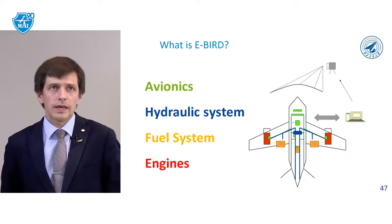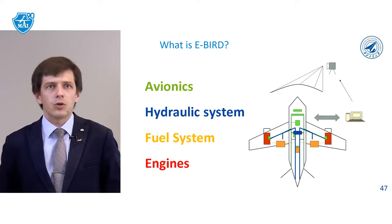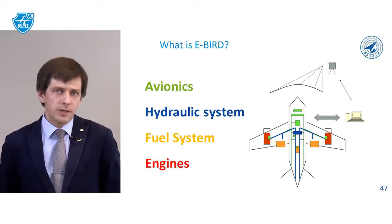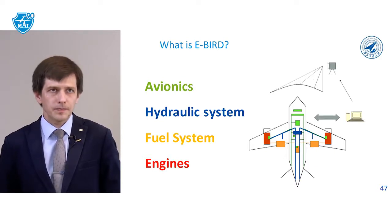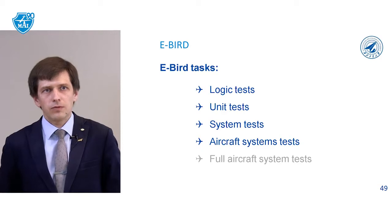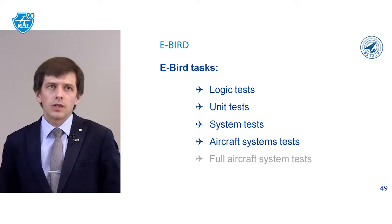The next step is verification on the eBird (electronic bird). On this slide the green represents avionics systems, blue is hydraulic systems, yellow is fuel system, and red is engines. On our eBird we can have real systems except engines, fuel, and hydraulic – those three types of systems will be simulated. The eBird tasks cover everything except full aircraft system tests, and tests made on eBird can be used during the certification process.